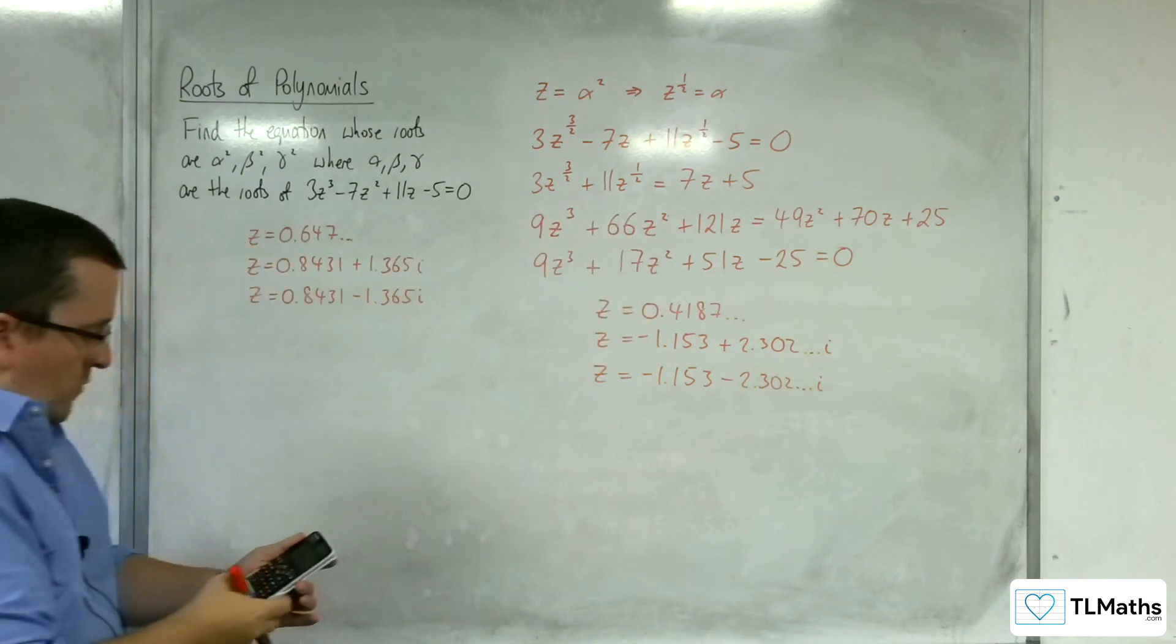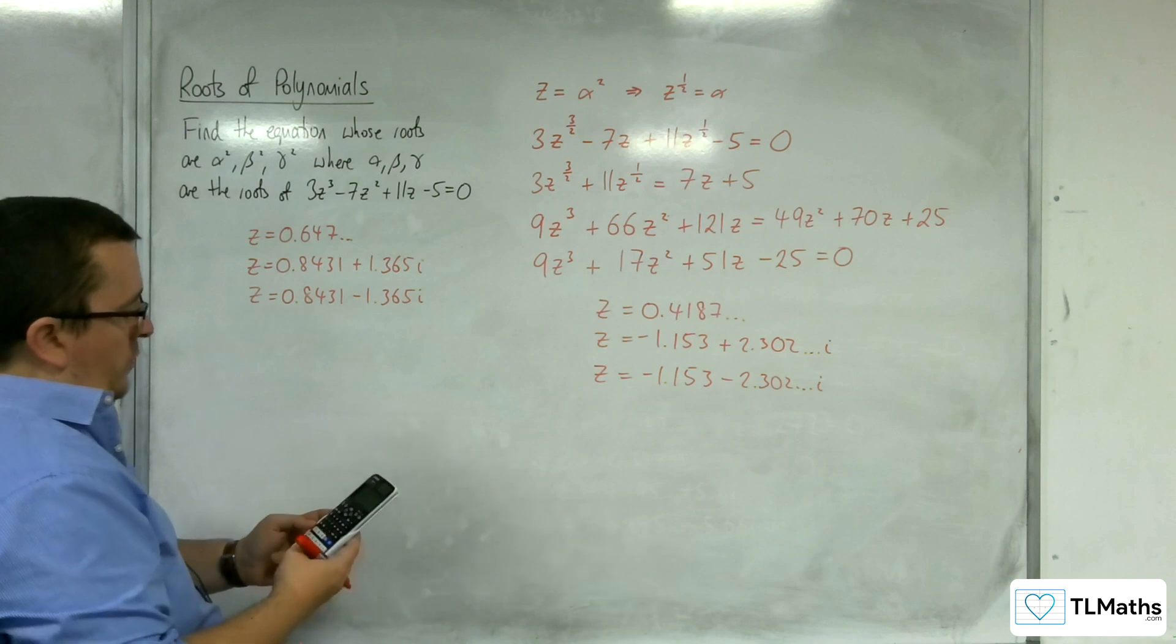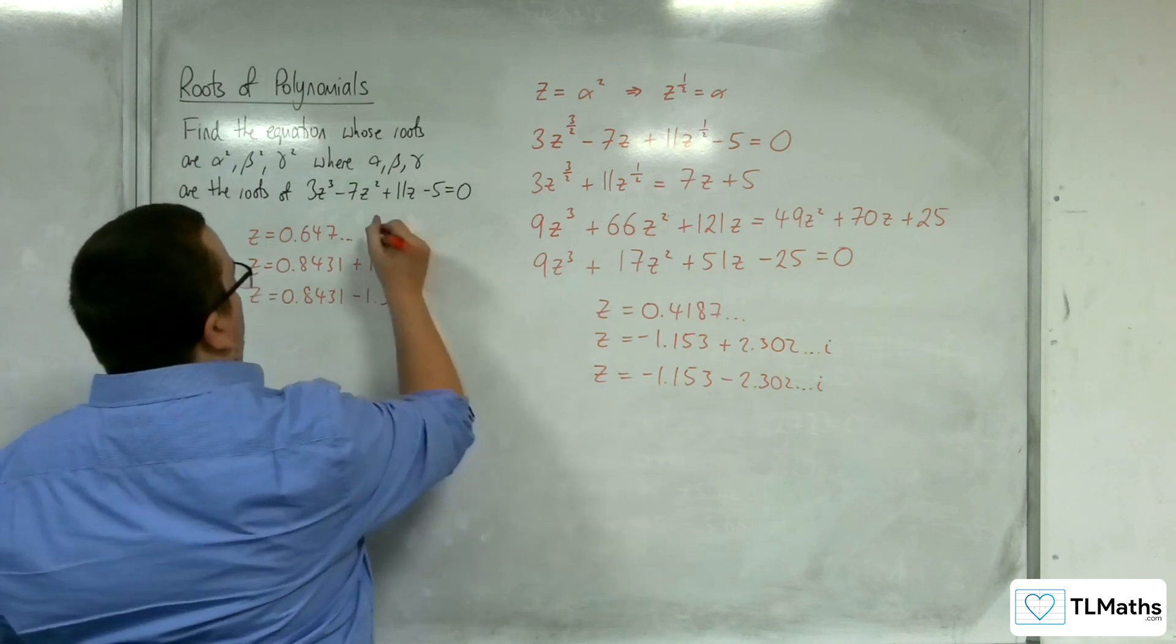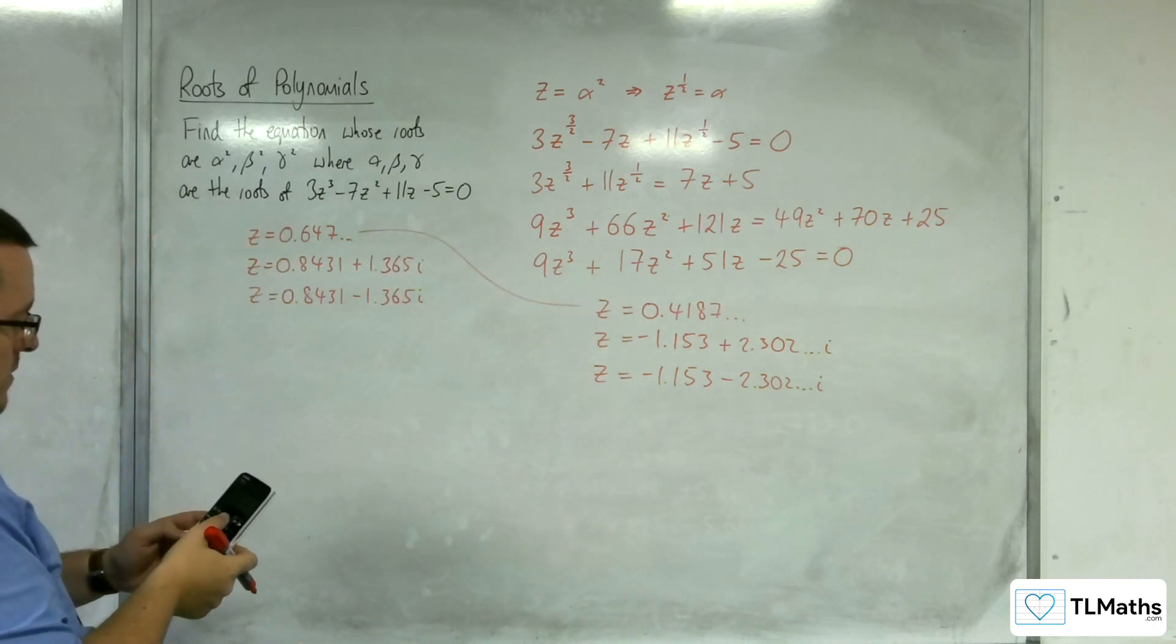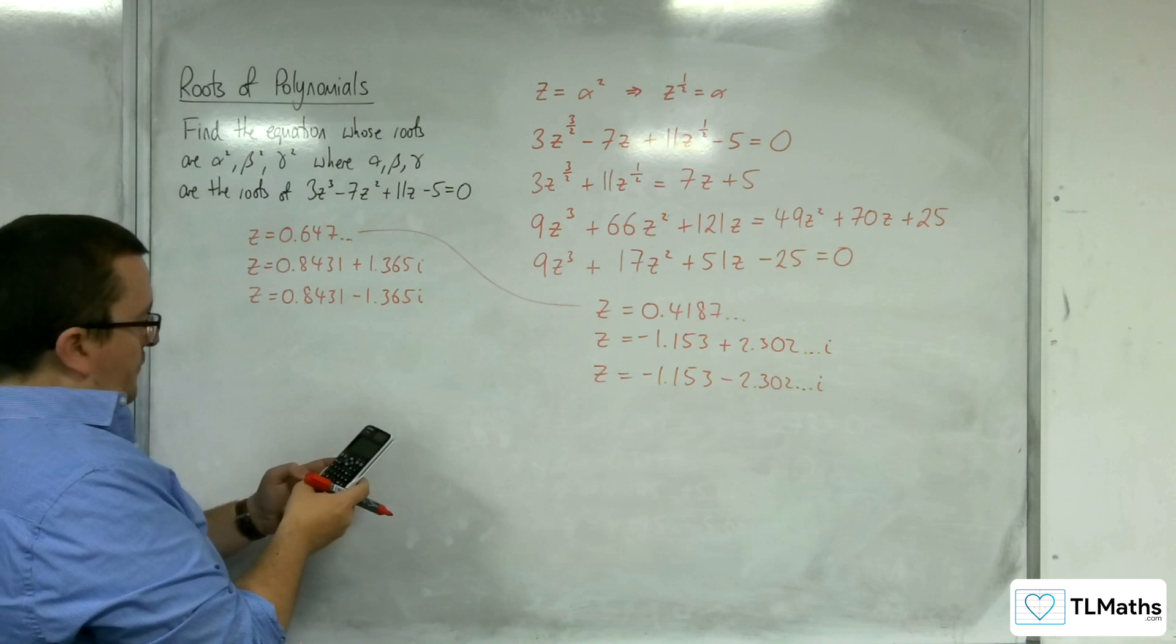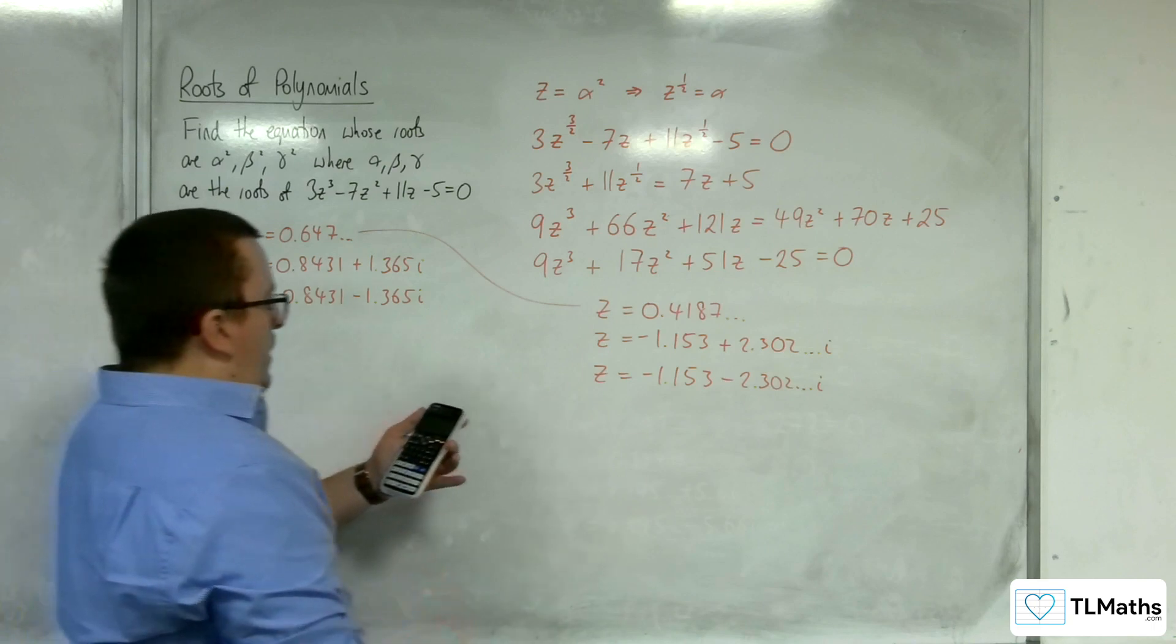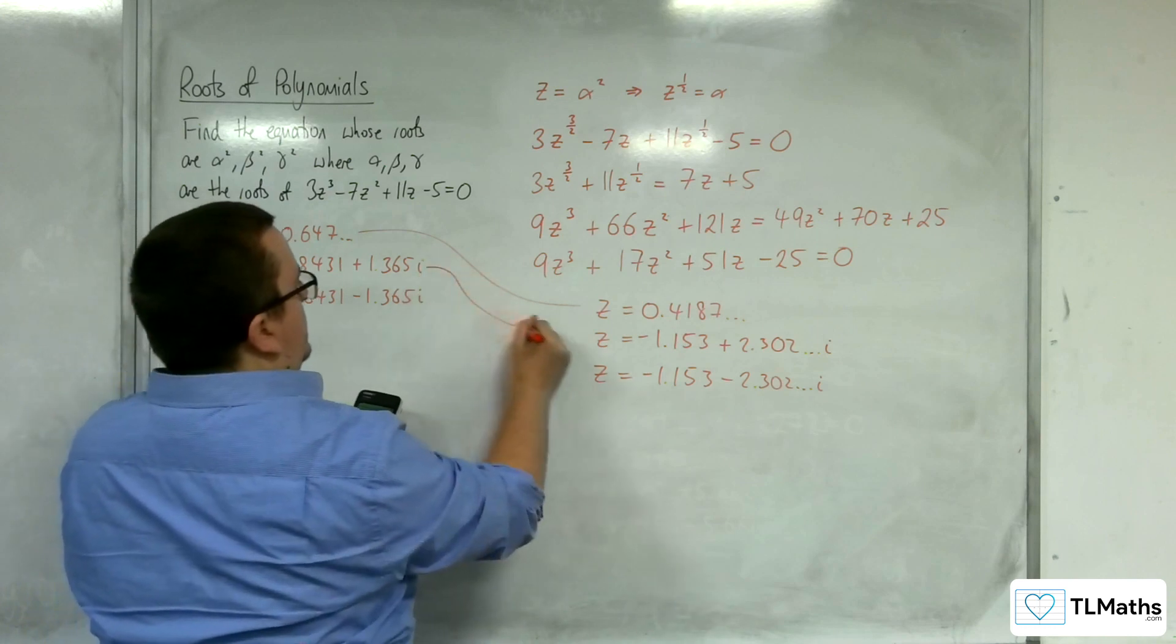Right, so if I try squaring each of these, I get 0.418, so that's that one. And if I make sure I'm in quadratic mode, into complex mode, 0.8431 plus 1.365i and square that, I get minus 1.15 plus 2.30, so that's that one.